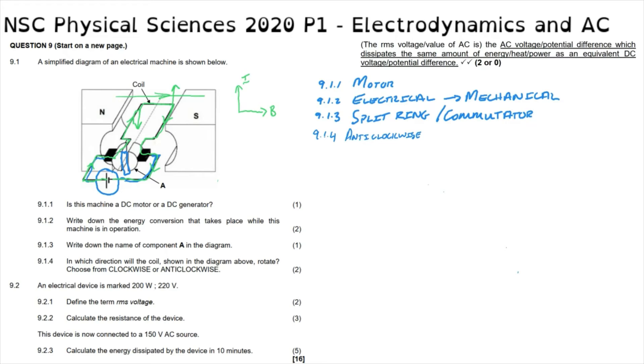Question 9.2 reads: an electrical device is marked as 200 watts and 220 volts. 9.2.1: define the term RMS voltage. The definition as given in the guidelines: the RMS voltage is the alternating current voltage or potential difference which dissipates the same amount of energy or heat or power as an equivalent direct current voltage or potential difference.